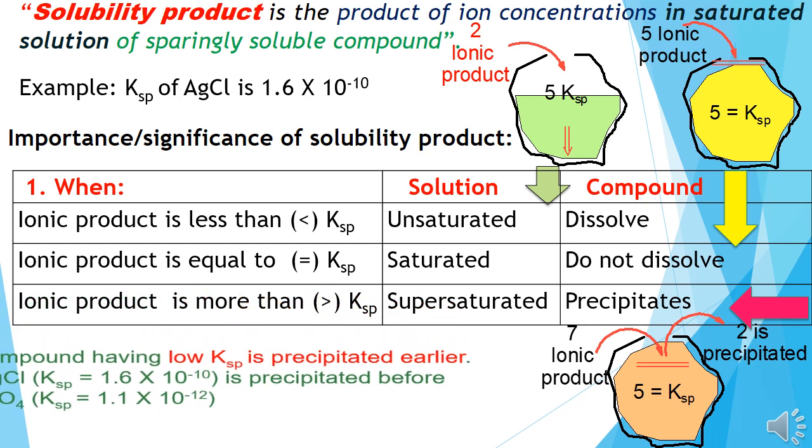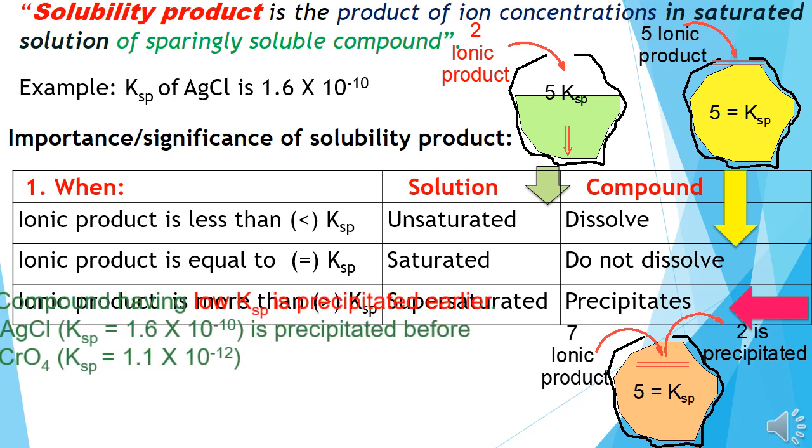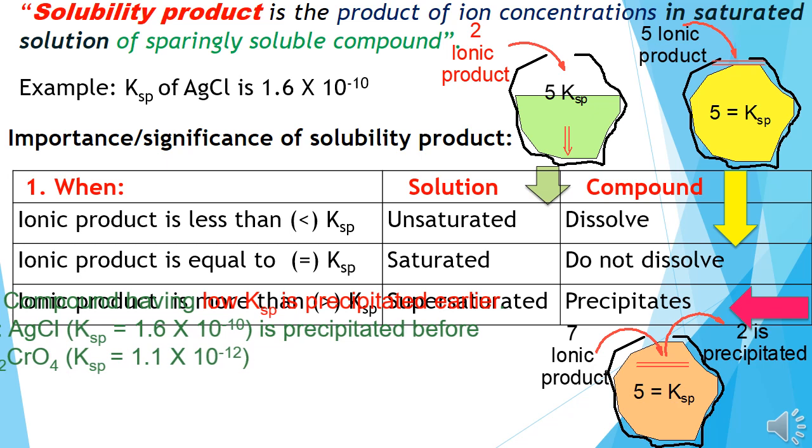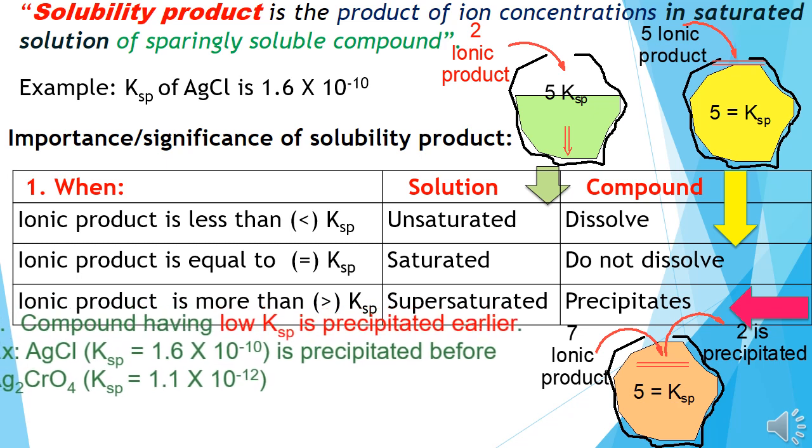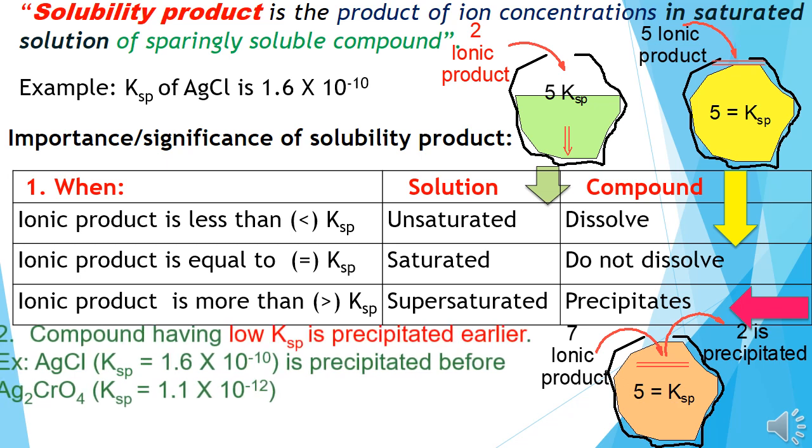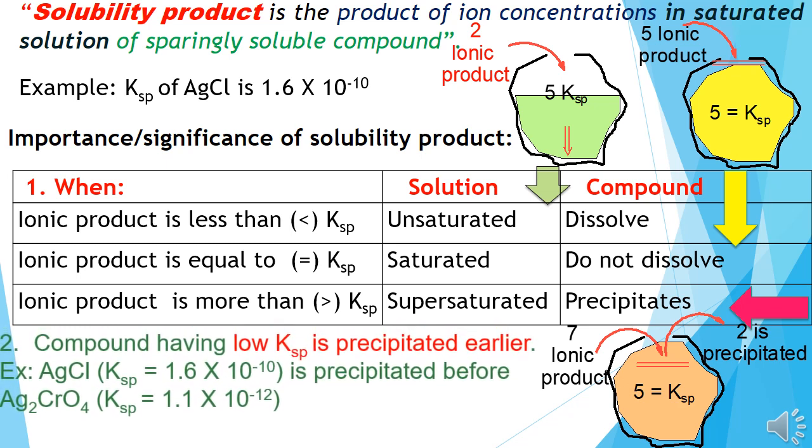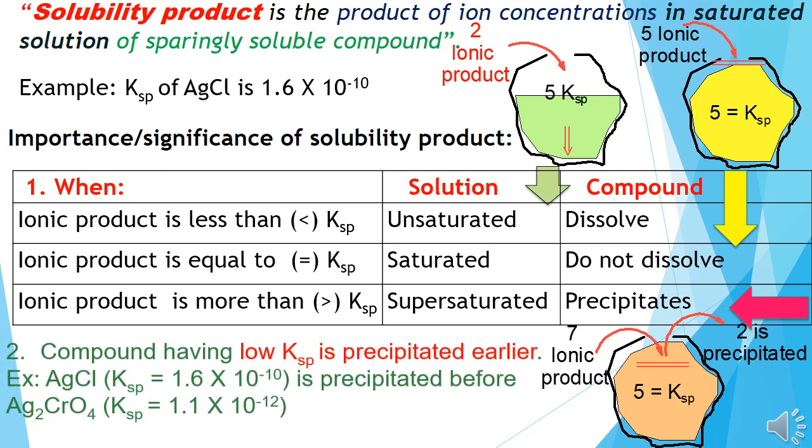So if there are two compounds, and we have to choose which compound will precipitate first, then the compound which has low Ksp will precipitate first. That means silver chloride, with Ksp of 1.6 into 10 to the power minus 10, will precipitate before silver chromate.